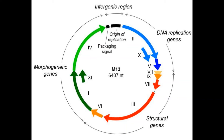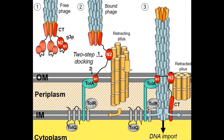We can now look at how the coat proteins help the phage infect an E. coli cell. The G3P protein is expressed outside the phage and has two subunits crucial for infection: N1 and N2. The N2 subunit docks the phage onto a pilus of the E. coli cell, while the N1 subunit combines with a protein called TolA, which is present in the periplasm of E. coli.